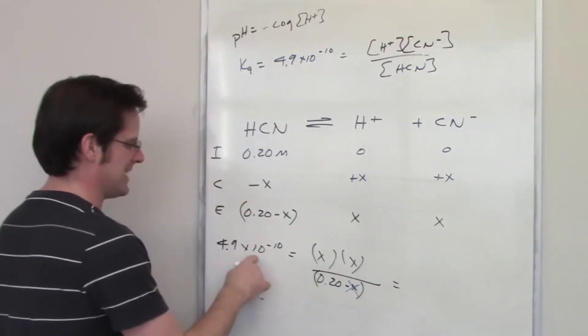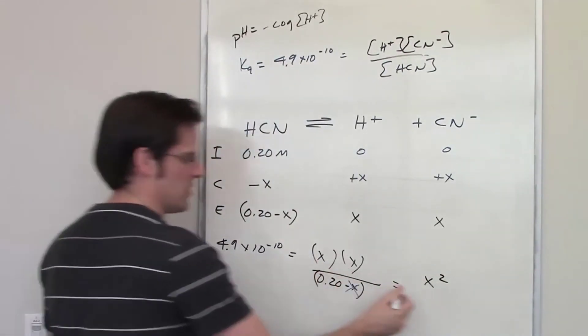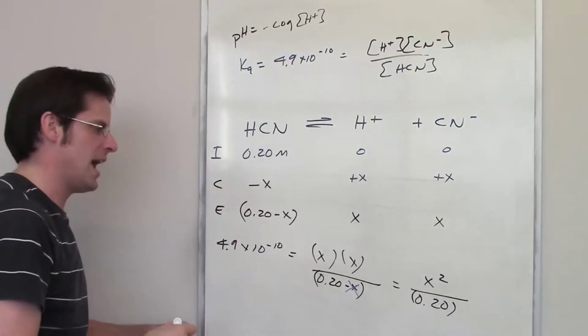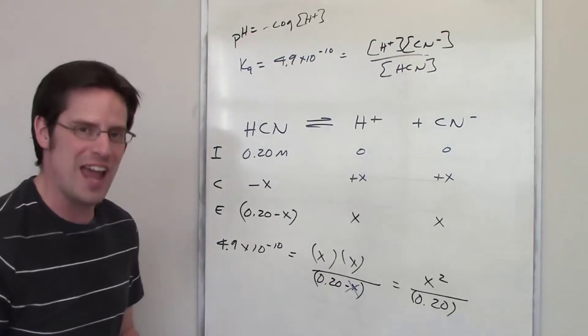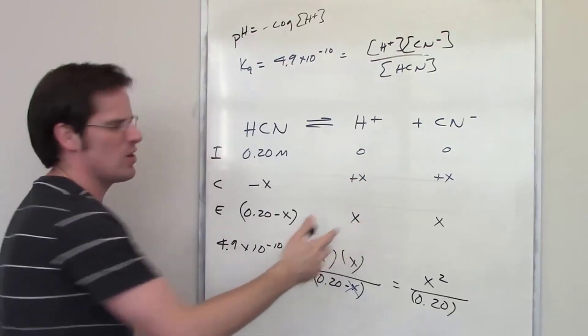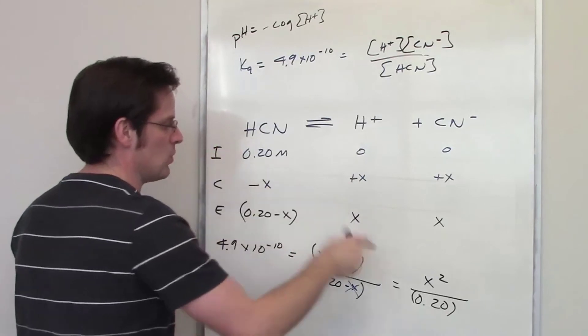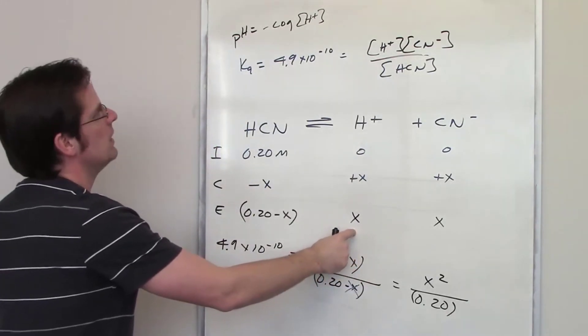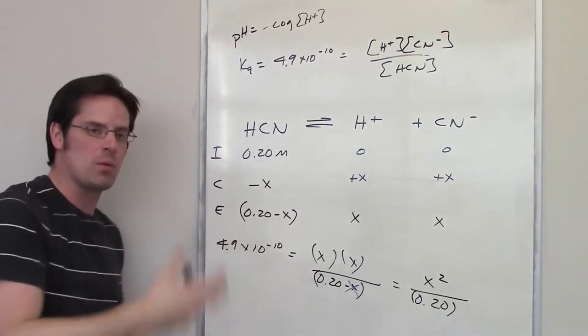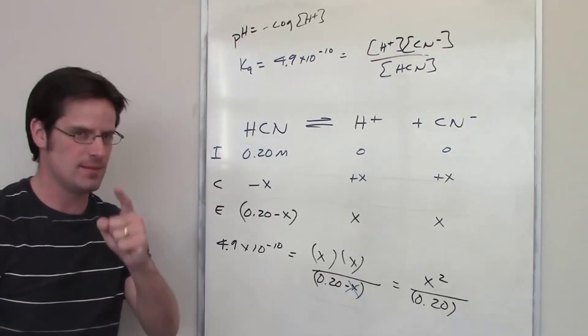So what I've got here is 4.9 times 10 to the negative 10th being equal to X squared, that is X times X in the numerator, divided by 0.20. All I have to do is solve for X. Once you solve for X, that is going to be equal to the concentration of H plus. It also is equal to the concentration of CN minus but I don't care about that really. Right now I just care about the concentration of H plus. So once I solve for X, I can take that number and put it up here in the equation for pH and determine what the final pH is going to be for this weak acid scenario. I'll let you go ahead and do that on your own.